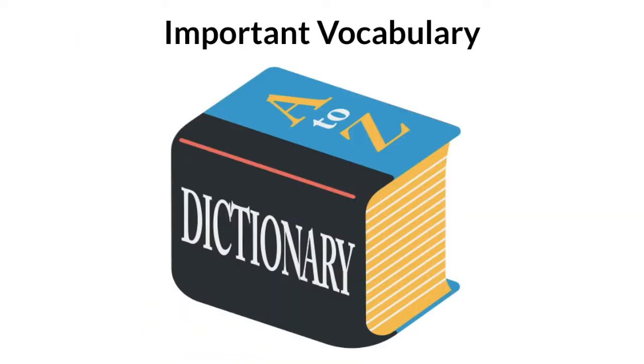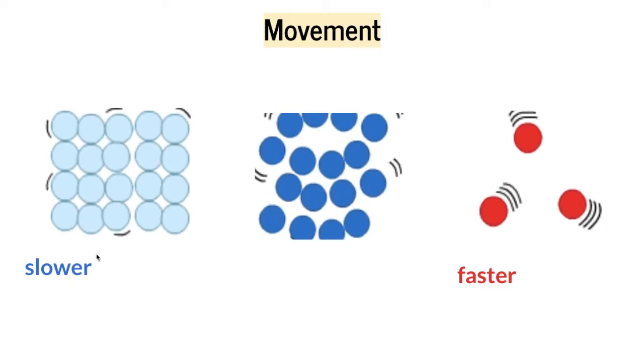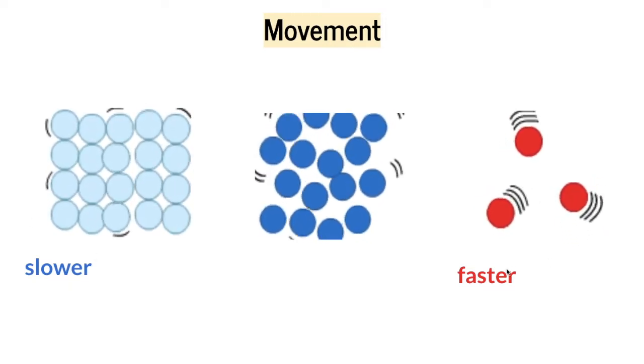Remember these important vocabulary words. Arrangement means how close or far the particles are from each other. Movement means how slow or fast the particles are moving.